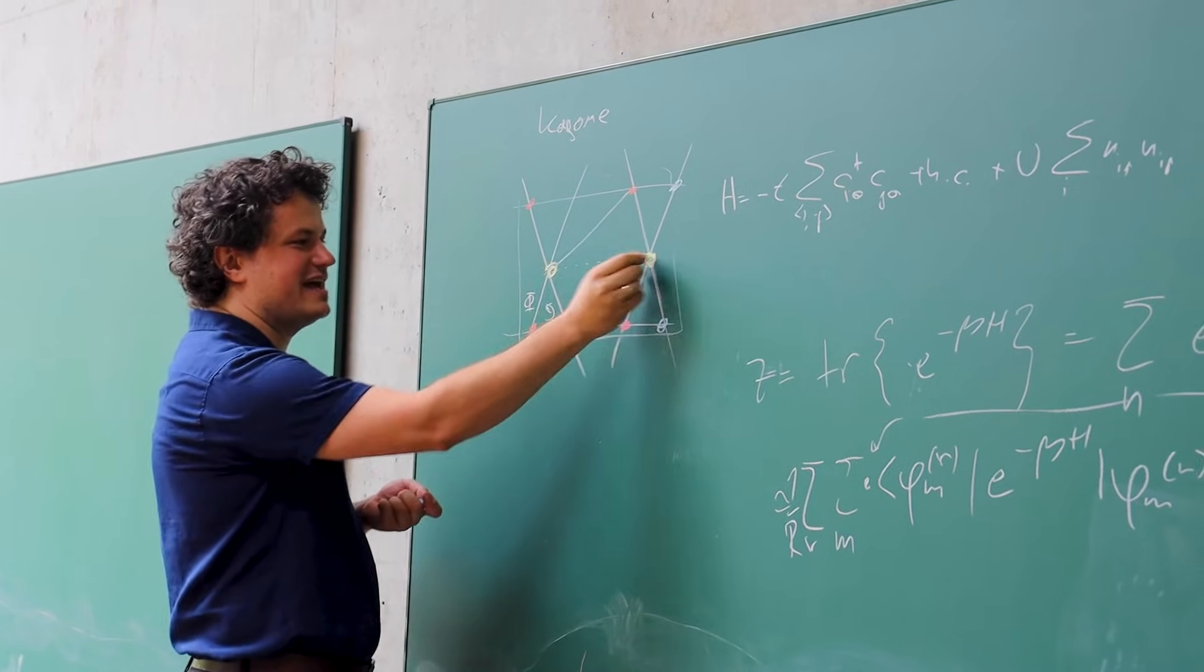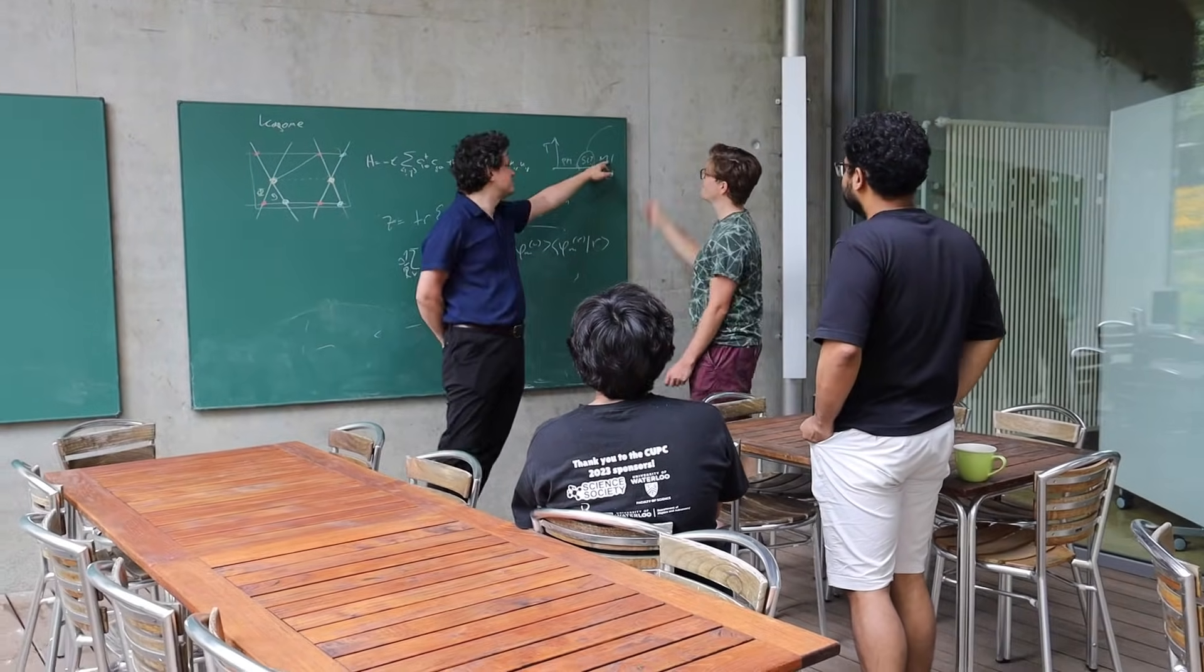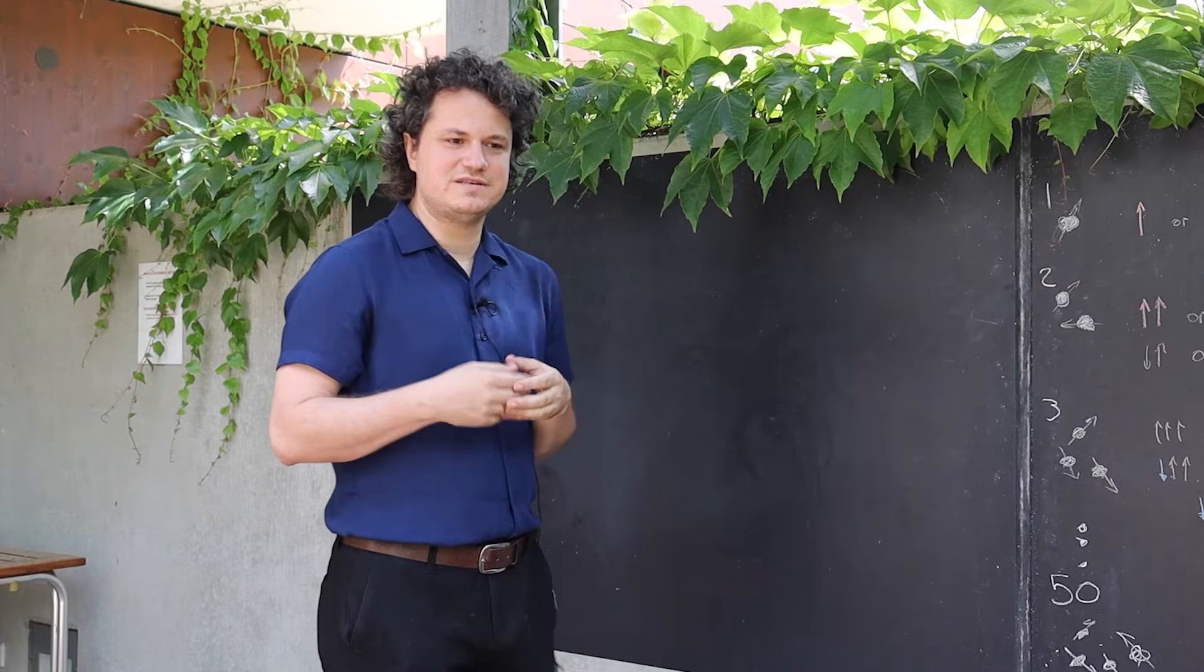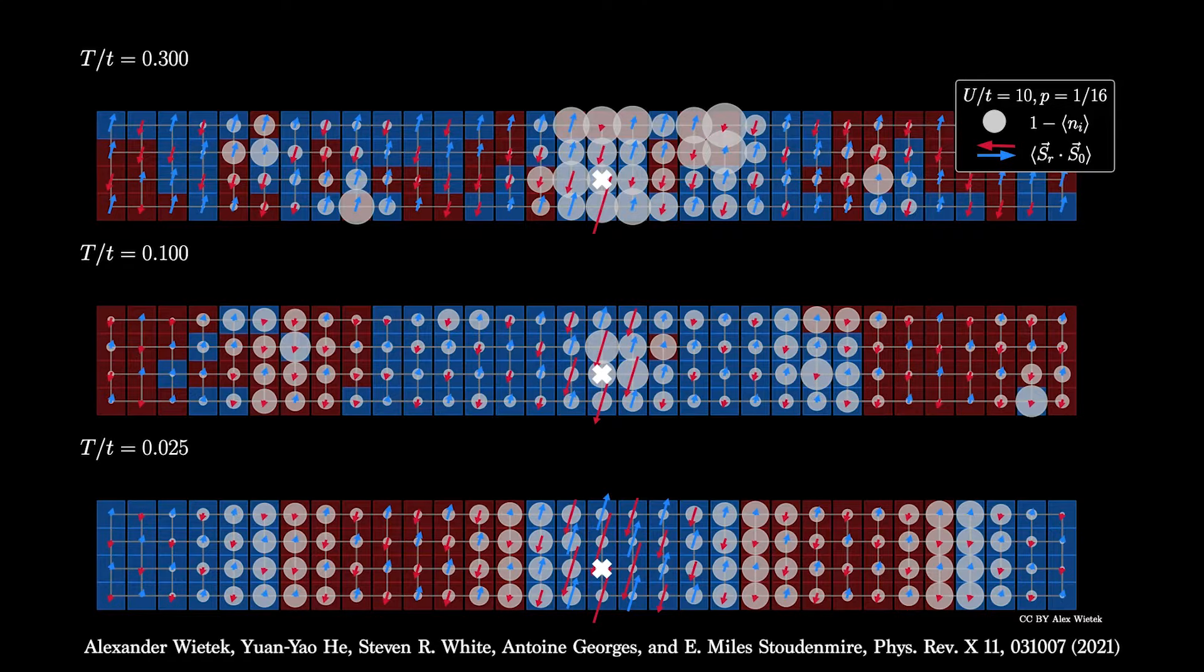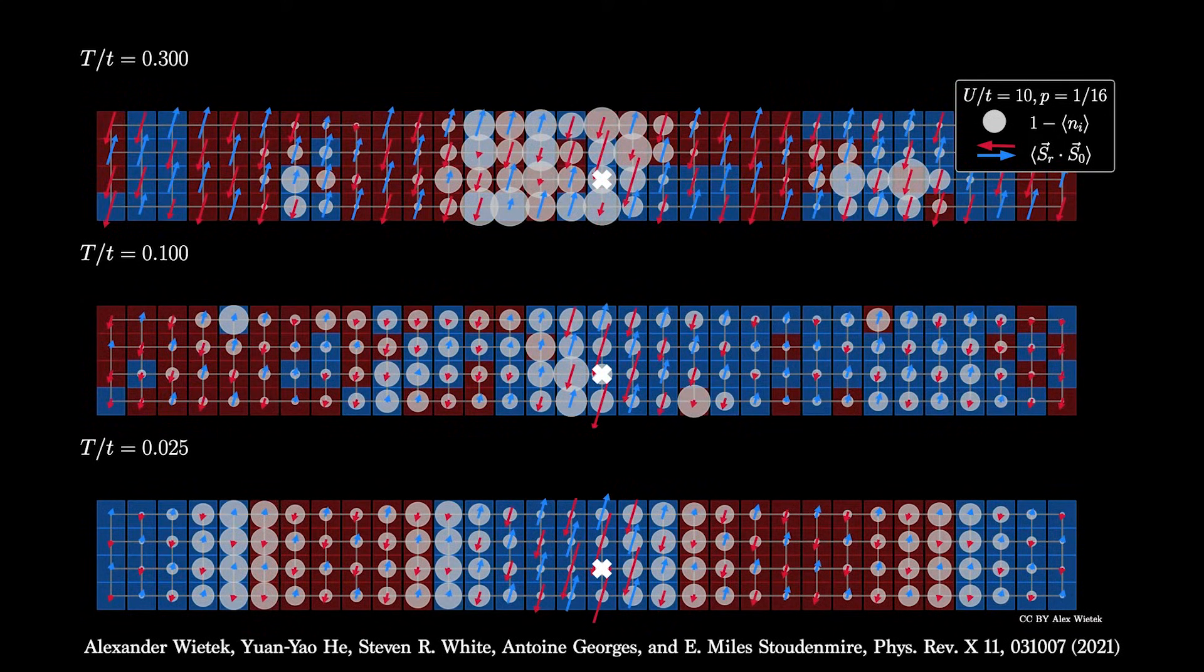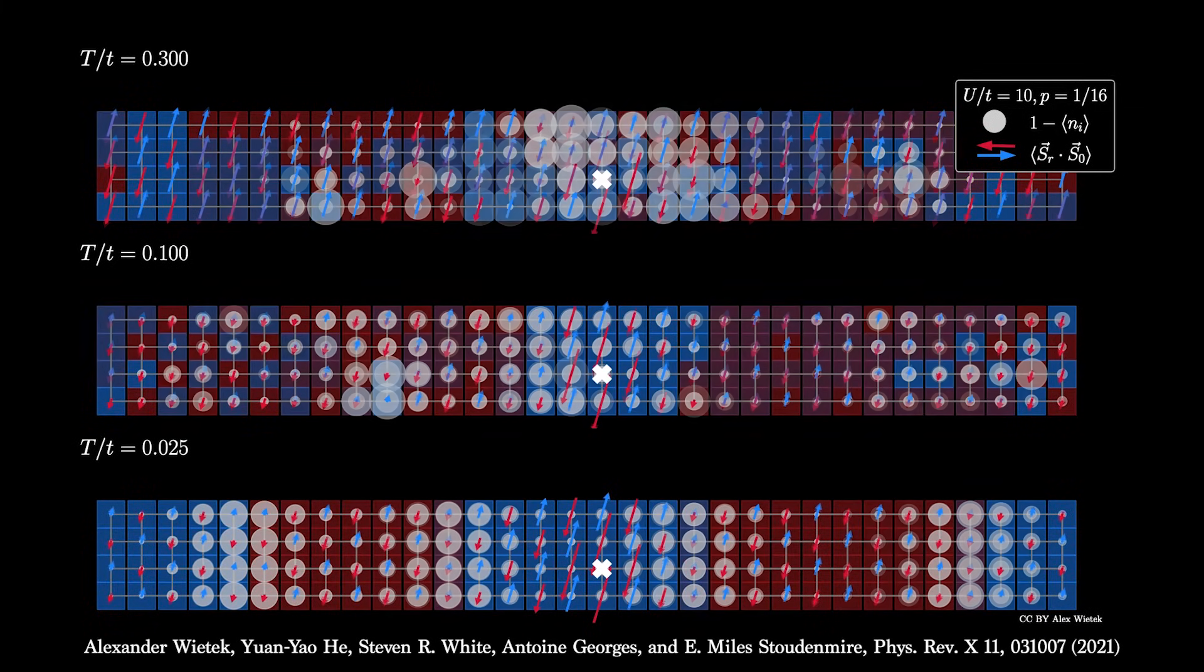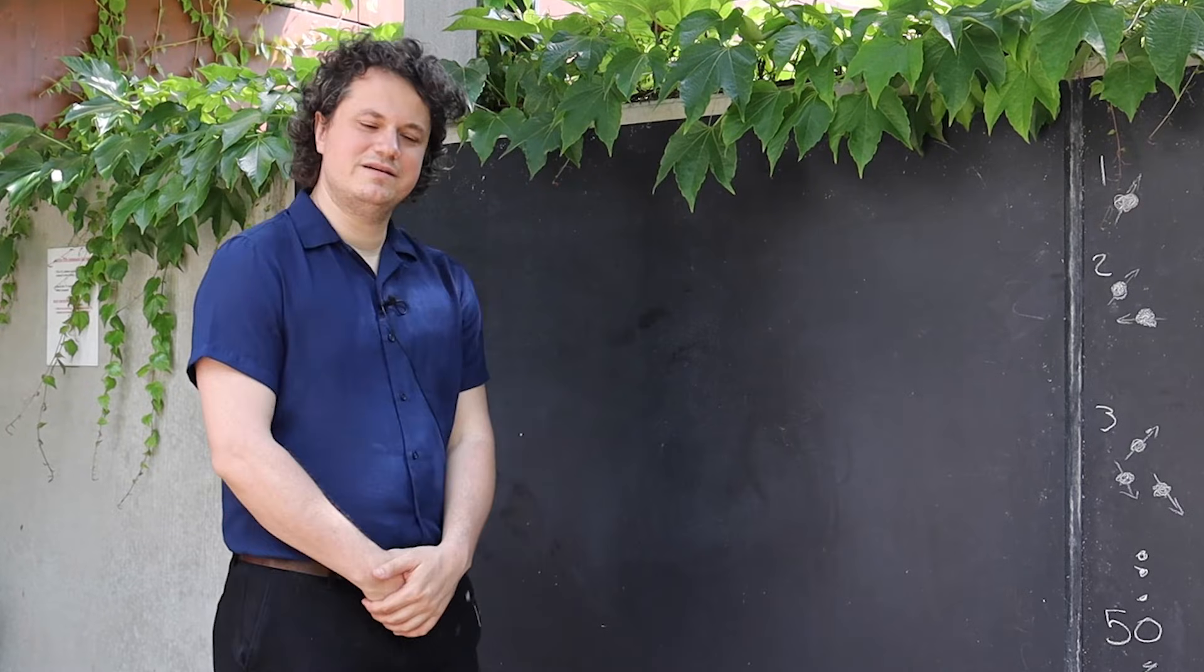Basically, we are trying to understand what possible forms of ordering could happen at low temperatures in the doped antiferromagnets. One of our contributions was to actually see how the stripes develop if you cool down the systems to low temperatures. We can give an estimate at what temperatures we expect stripes to form and how exactly this happens.